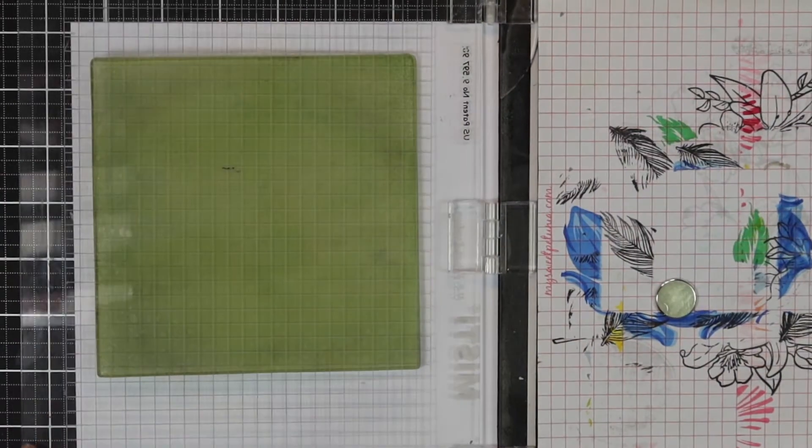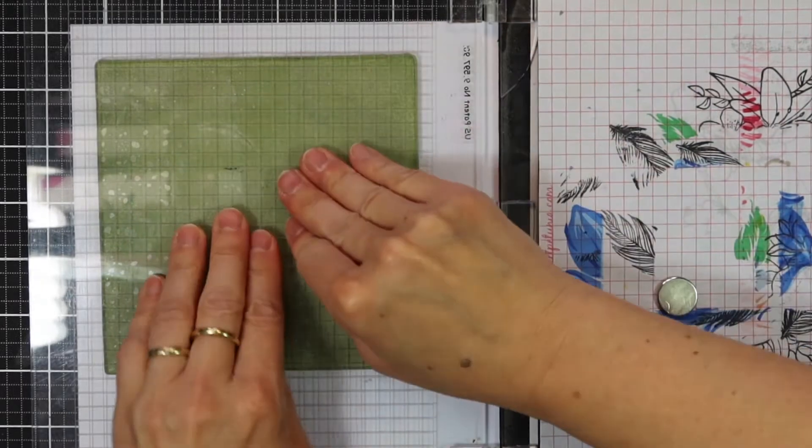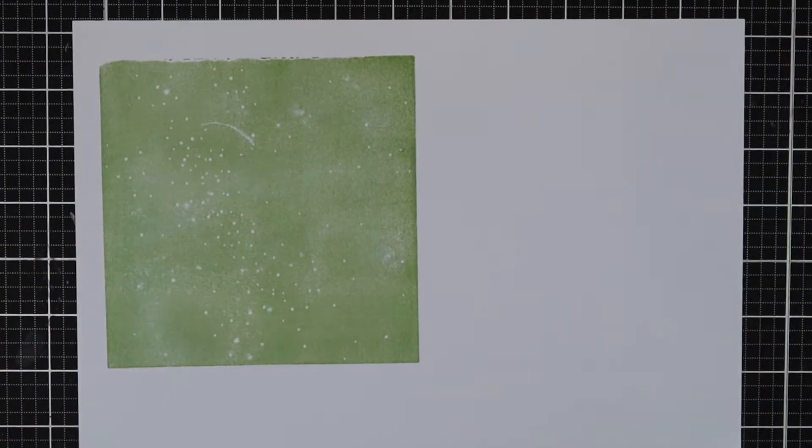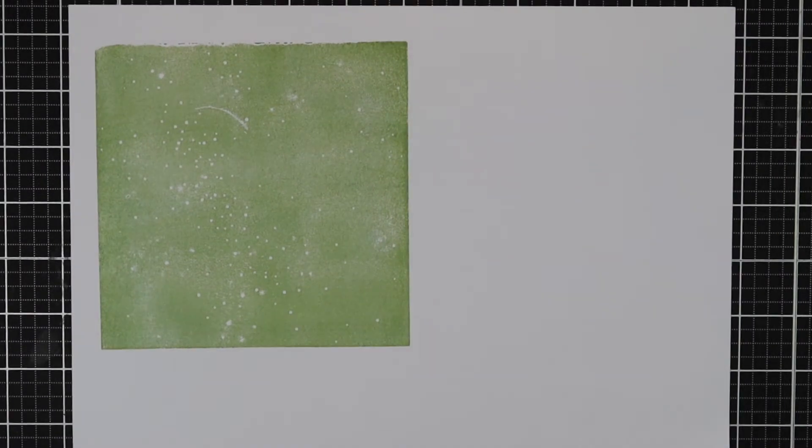This is Stellar stamp set from Altenew. This is a 6x8 stamp set containing 12 individual stamps. The set features a large background of stars and a captivating two-layer planet.